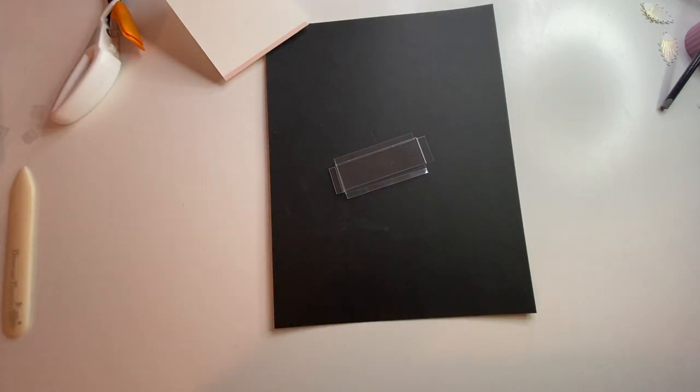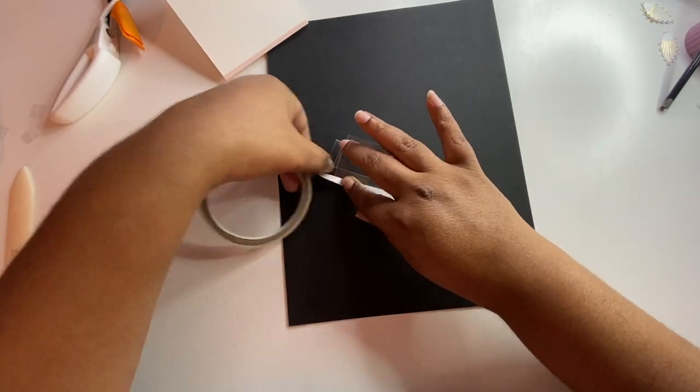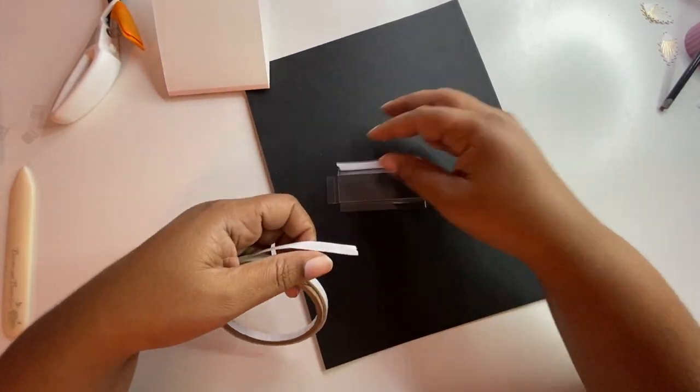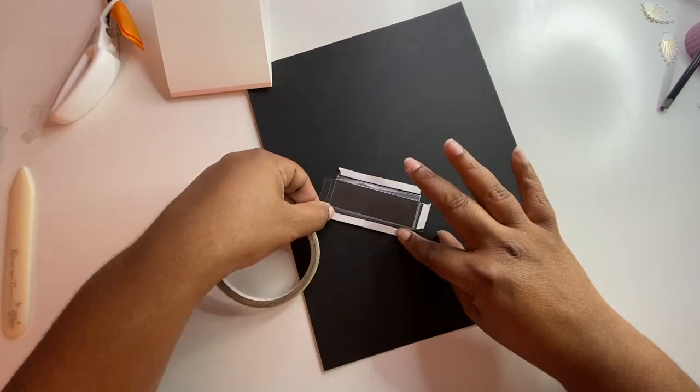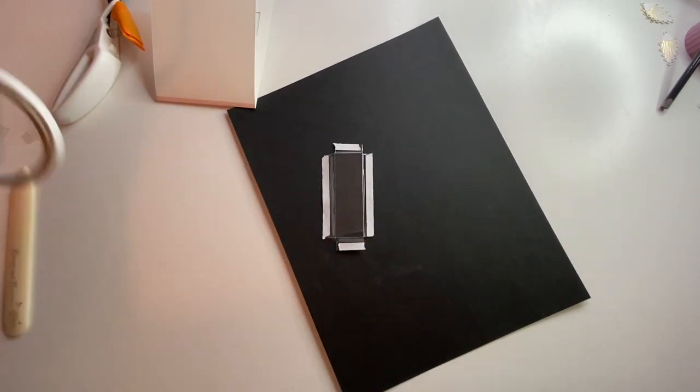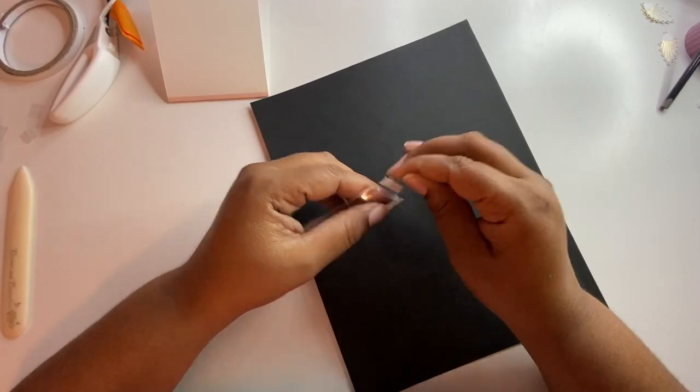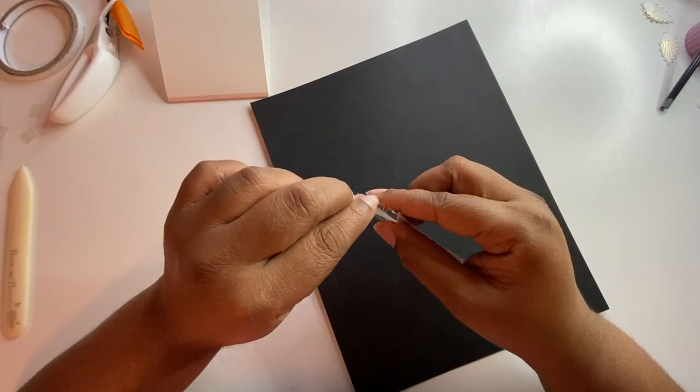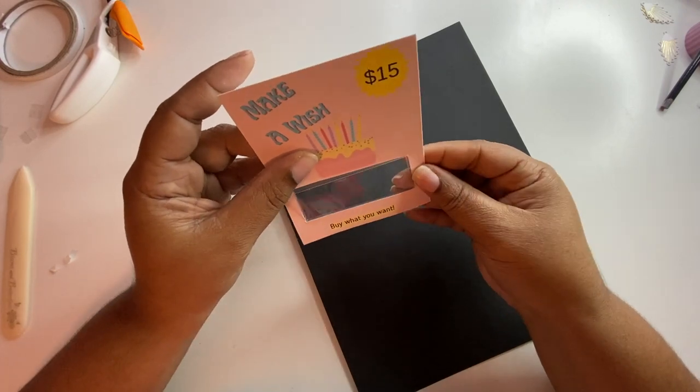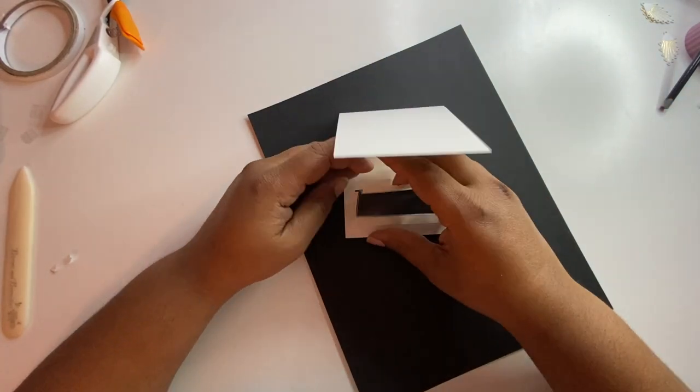Then I'm going to take some double-sided adhesive and this double-sided adhesive is about a quarter of an inch. I'm going to put this on all four sides and then I'm going to remove one of the strips. I'm just reinforcing my folds to make sure I have a really good fold.